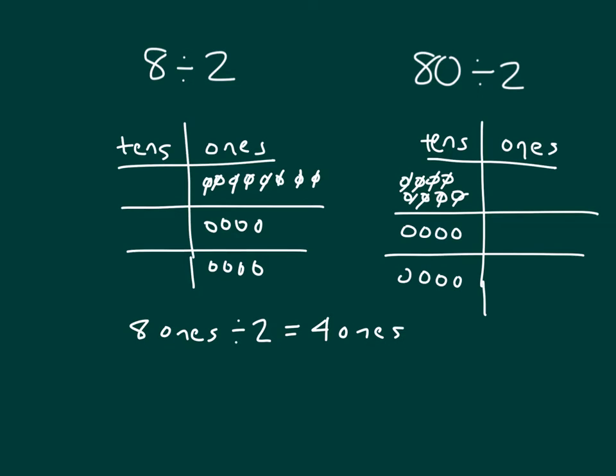Within each of those groups, there's now 4 tens. So we have 8 tens, and when we divide 8 tens, which is 80, divided by 2, we would get 4 tens.